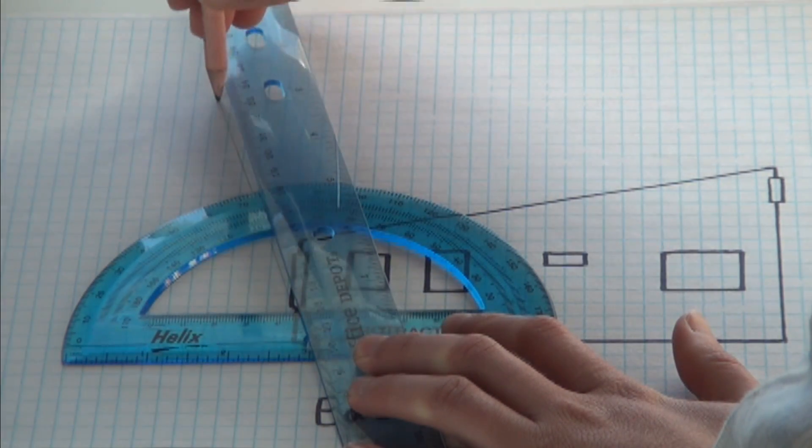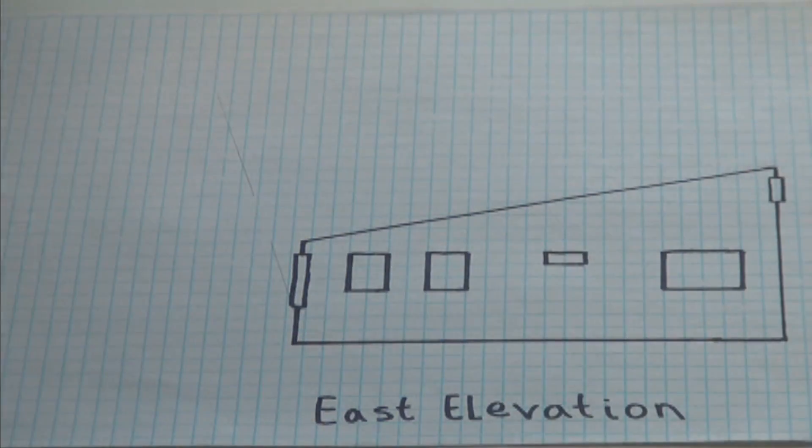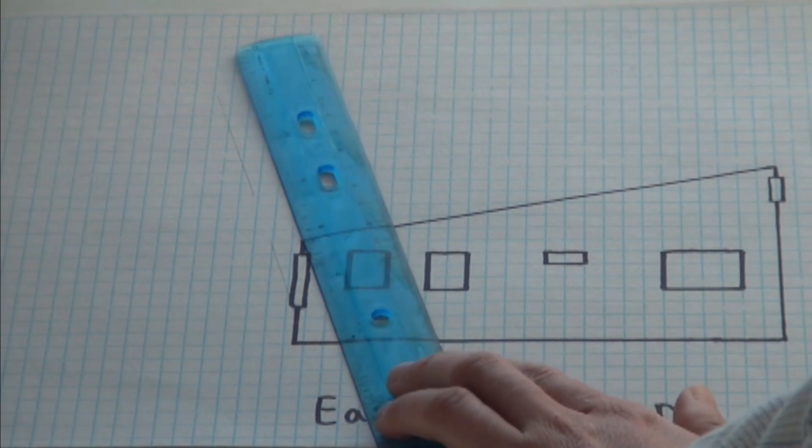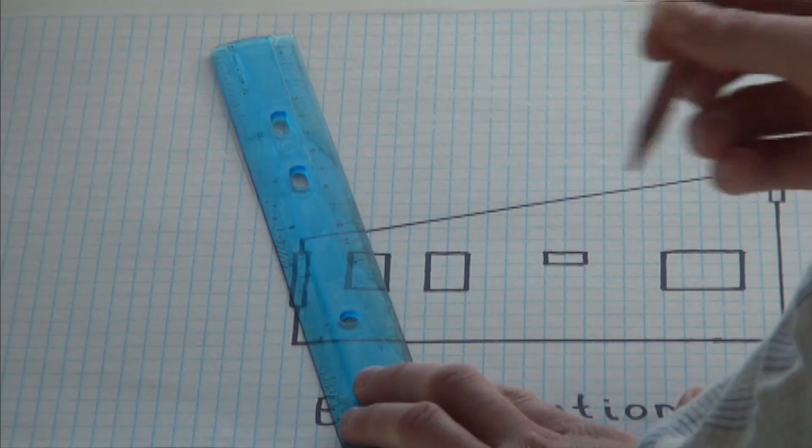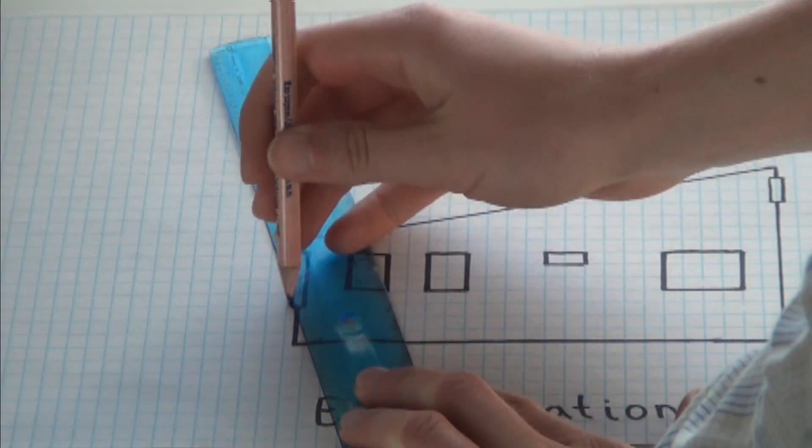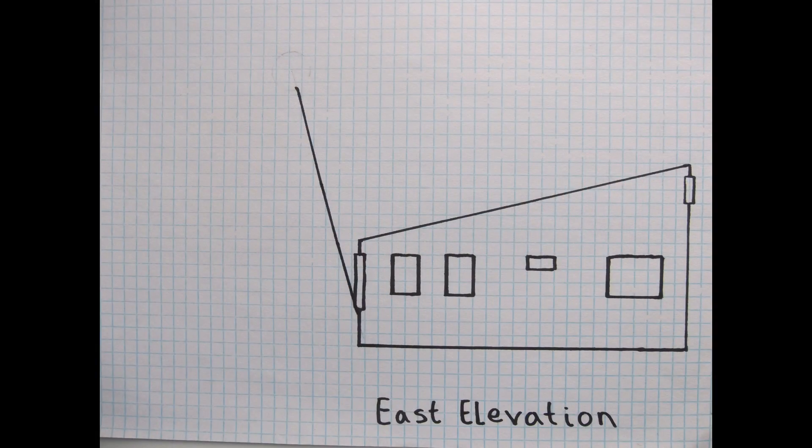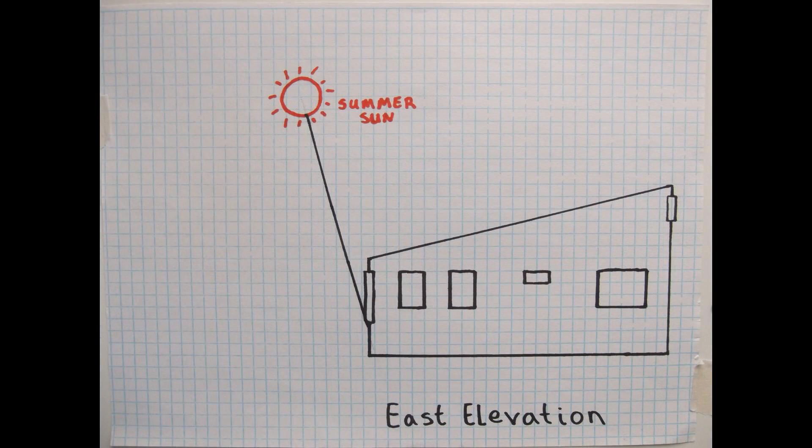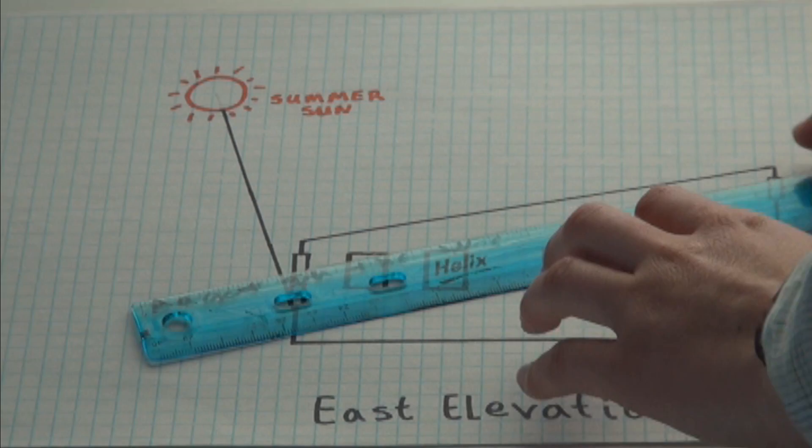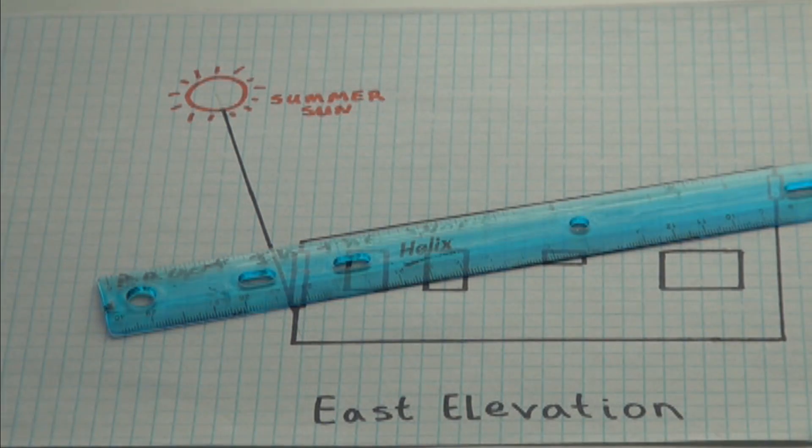But at the very least, you want to line it up with the bottom of your south facing windows. Draw a line along your ruler at this angle. Remove the protractor and using the ruler, retrace along the line you just drew. This is the summer sun altitude. Draw a sun and label it summer sun. The overhang needs to reach this line in order to shade the windows from the summer sun. Draw the overhang to this point extending the line of the roof.